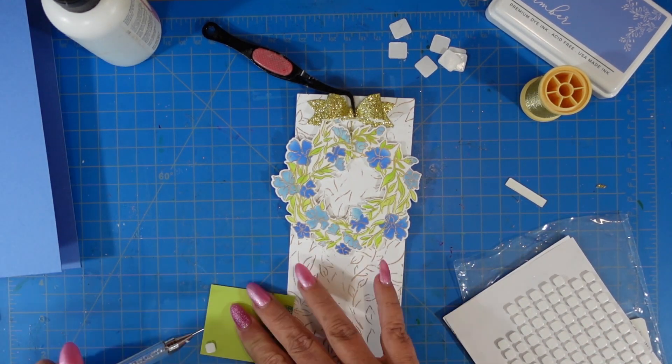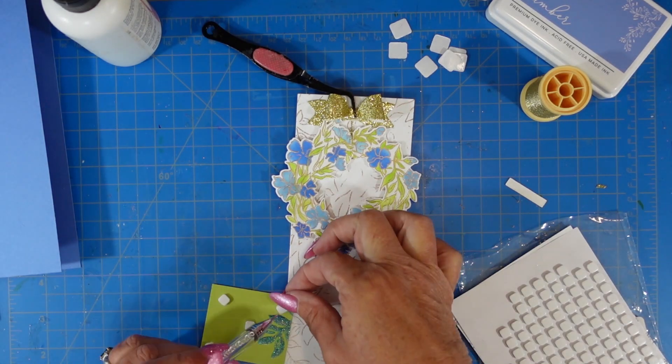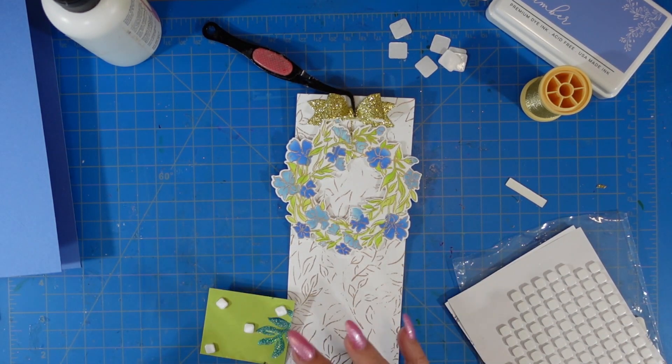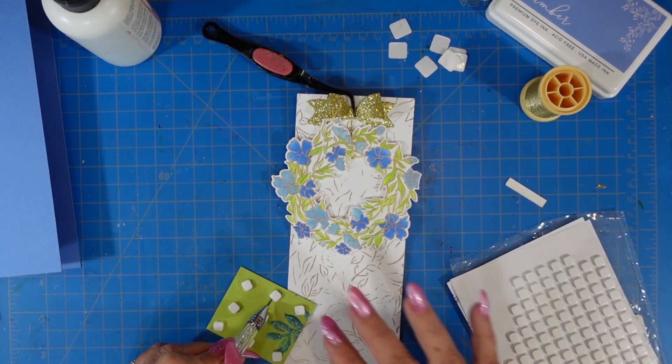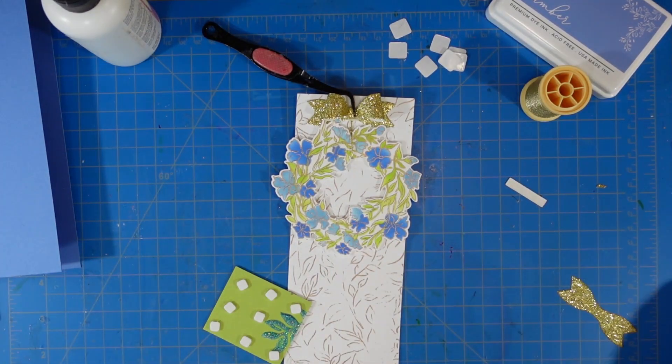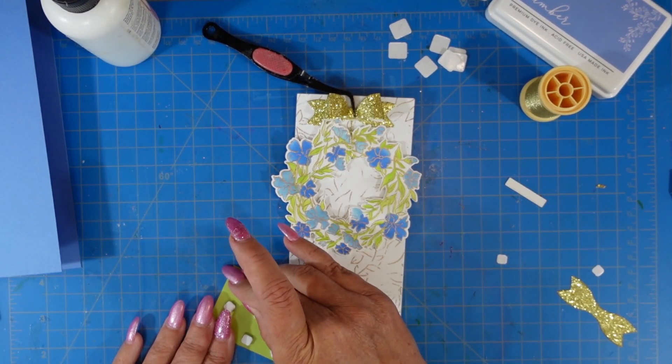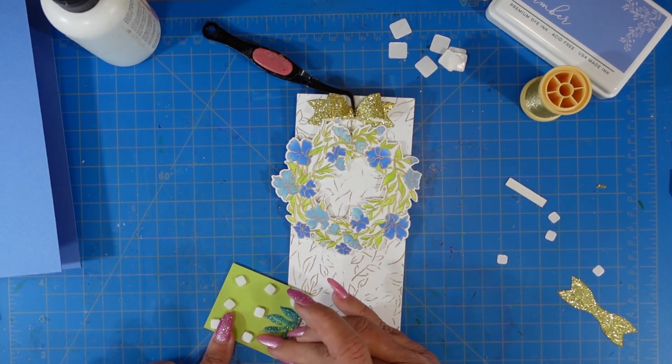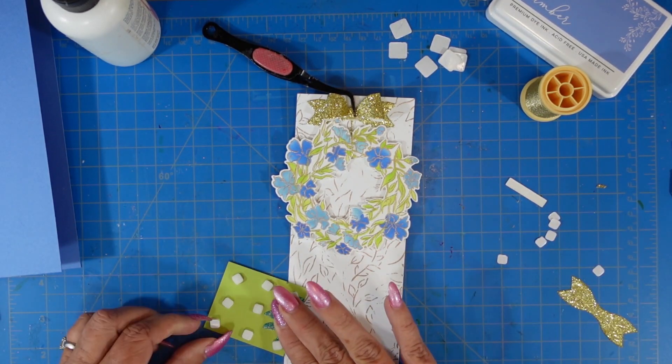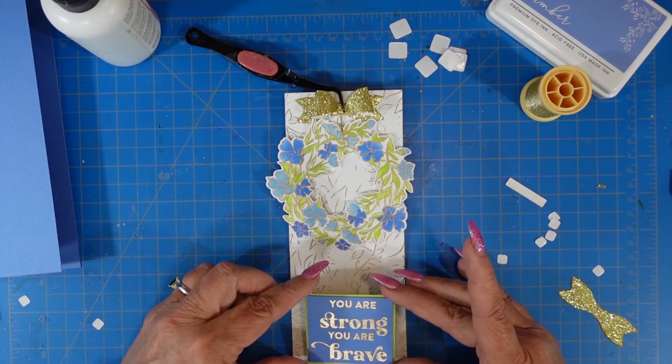As you can see, that is a scrap piece of paper. Whenever I can use scraps, I do try to. I try to use up what I have, and I don't throw a whole lot away. If they're tiny scraps, I'll throw them away, but I do try to keep the scraps that are usable and reuse them. I'm going to place this on, and then I'm going to use the art glitter glue and I am going to glue the banner to the top of my card base. I did bring in that Lapis blue card base.